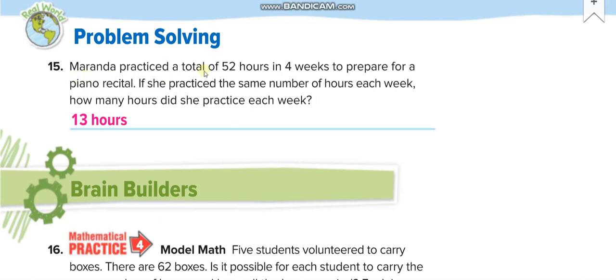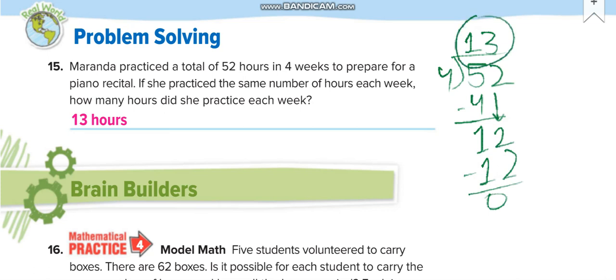Ronda practiced a total of 52 hours in four weeks to prepare for a piano recital. If she practiced the same number of hours each week, so 52 divide by 4. 52 inside and 4 outside. And then here you will write it: 52 divided by 4. 4 times 1: 4. 5 minus 4: 1. You will bring the 2 down. 4 times 3 is 12. Minus 0. So here is the answer.